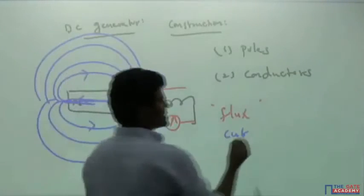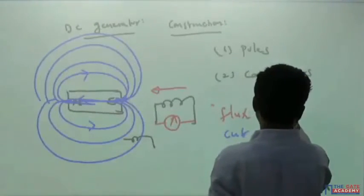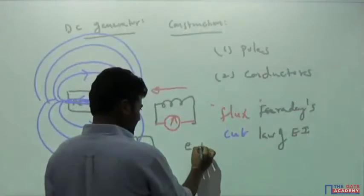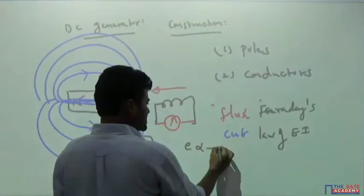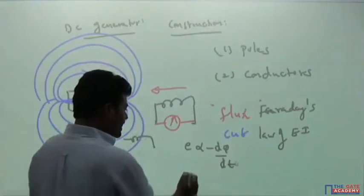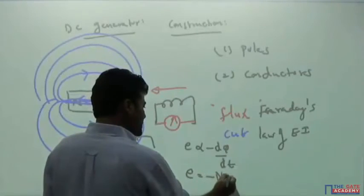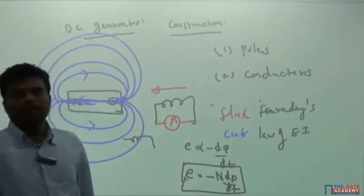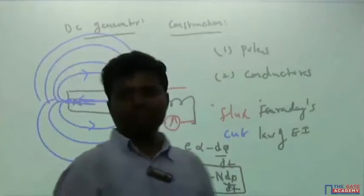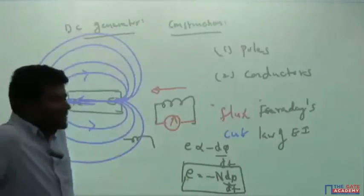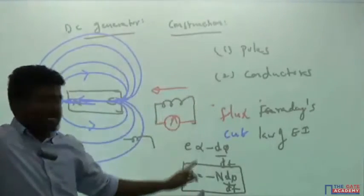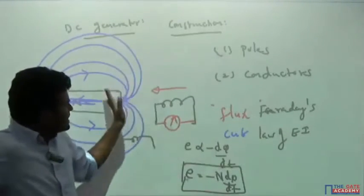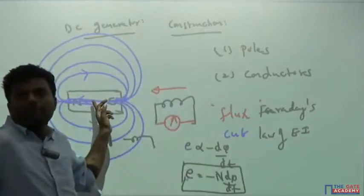This principle is called Faraday's laws of electromagnetic induction. In simple terms, the EMF induced in any conductor is directly proportional to minus dΦ/dt. We write: E = −N dΦ/dt. This is the EMF equation from Faraday's laws. The number of poles can also be increased beyond two.